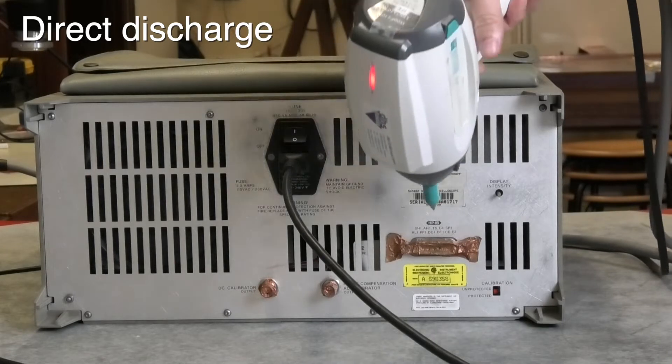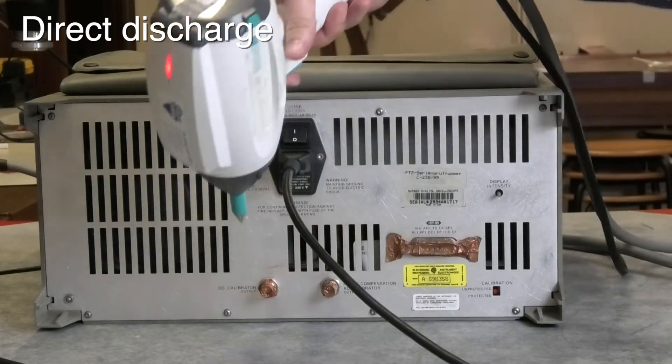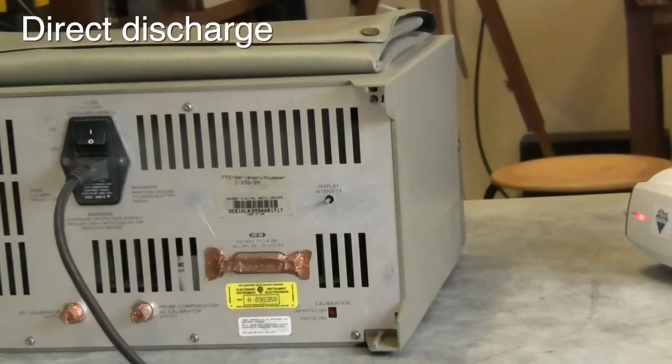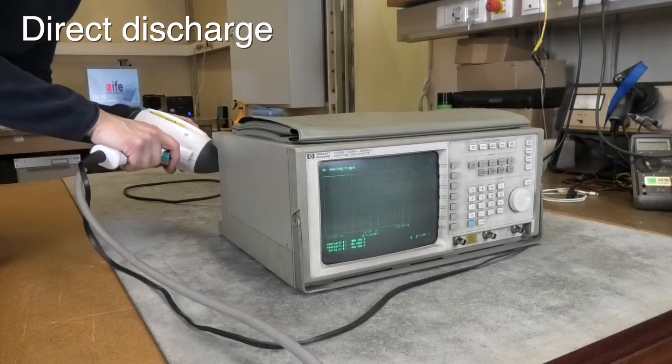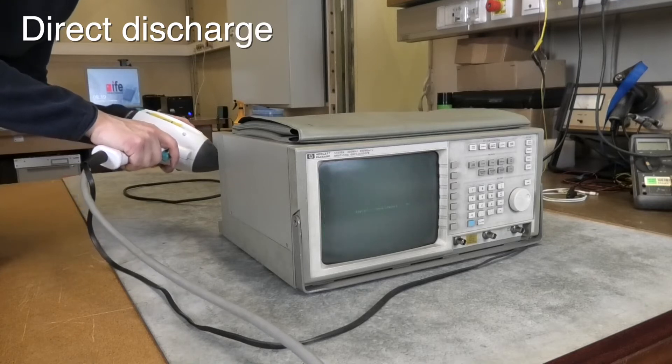But we haven't tested the backside yet. Let's try a few tests here as well. This knob looks suspicious because it goes directly into the casing. Oh the device is rebooting.